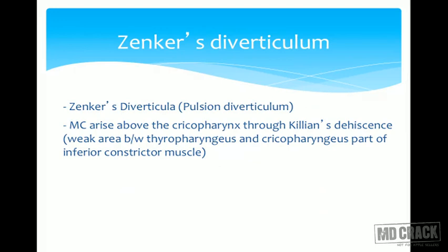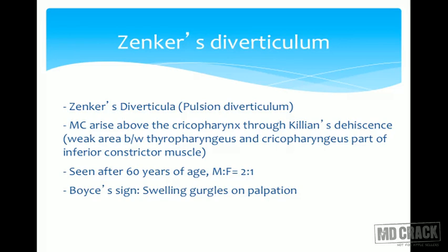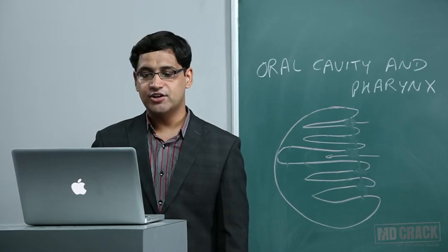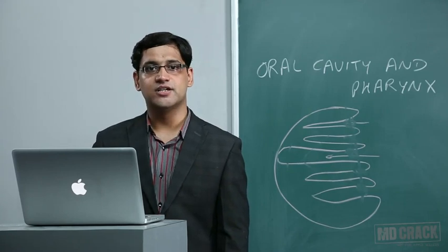Zenker's diverticulum, or pulsion diverticulum, most commonly arises from the cricopharynx through Killian's dehiscence — a weak area between the thyropharyngeus and cricopharyngeus parts of the inferior constrictor muscle. It is seen after age 60, almost twice as common in males. An important sign is Boyce's sign — swelling gurgles on palpation. The surgical procedure is Dohlman's procedure: endoscopic diathermy of the diverticuloesophageal septum. This concludes this session.